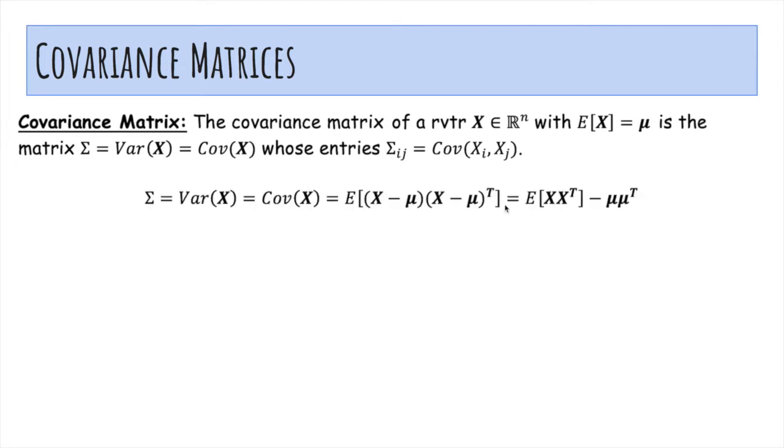Here's a formula for it, and you'll see that it kind of looks like E of X minus mu quantity squared, or E of X squared minus E of X quantity squared, but in vector notation.